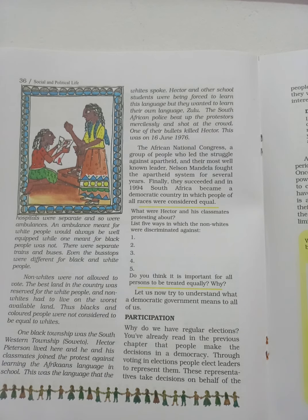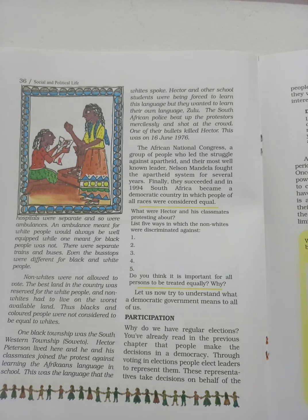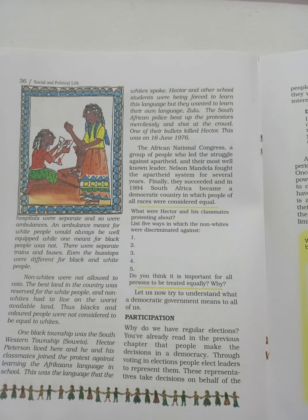At last, the people started to protest against this. The African National Congress, a group of people, led the struggle against apartheid. Their most well-known leader, Nelson Mandela, fought the apartheid system for several years. Finally, they succeeded, and in 1994, South Africa became a democratic country. That is the history of South Africa and the apartheid law.